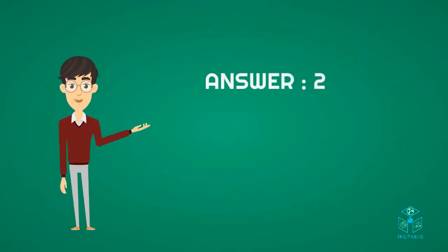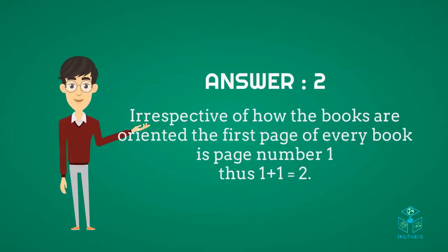The answer is 2. Irrespective of how the books are oriented, the first page of every book is page number 1. Thus 1 plus 1 equals 2.